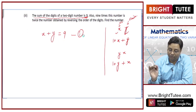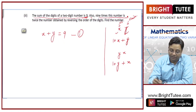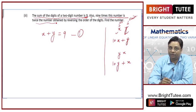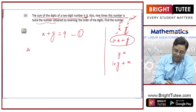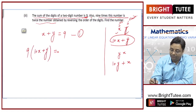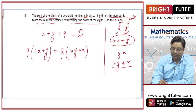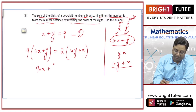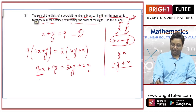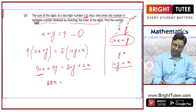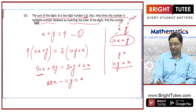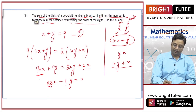The sum of the digits is 9, so x plus y equals 9 — this is my first equation. Also, 9 times this number is twice the reversed number: 9 into (10x plus y) equals 2 into (10y plus x). Expanding: 90x plus 9y equals 20y plus 2x. So, 88x minus 11y equals 0. Dividing by 11 gives 8x minus y equals 0, which is my second equation.